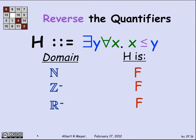Let's make it more interesting by changing less-than to less-than-or-equal-to. Now it's possible for a biggest element to exist. For non-negative integers, there's still no greatest element since x+1 is always bigger. For negative reals, r/2 is still bigger for any r. But for the negative integers, there is a biggest element: namely minus 1, which is greater than or equal to every other negative integer.